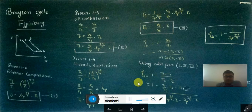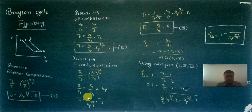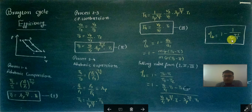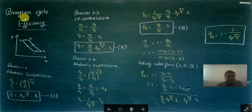Hello friends, my name is JV and today I am going to talk about the Brayton Cycle. The Brayton Cycle efficiency that we are going to derive is: efficiency equals 1 minus 1 upon Rp raised to gamma-1 upon gamma, where Rp is the pressure ratio, meaning P2 divided by P1, or P3 divided by P4. This is because the Brayton Cycle involves constant pressure processes in combustion and exhaust.